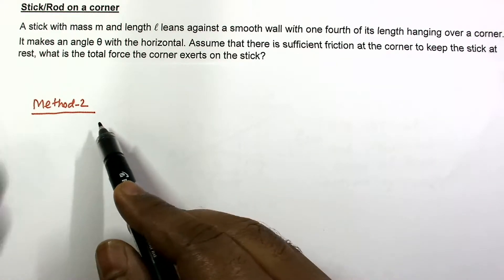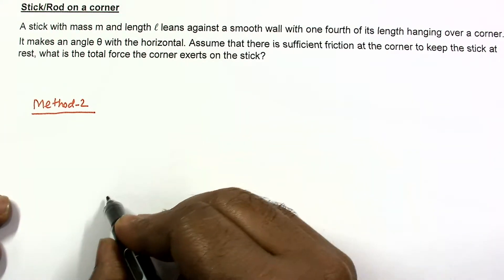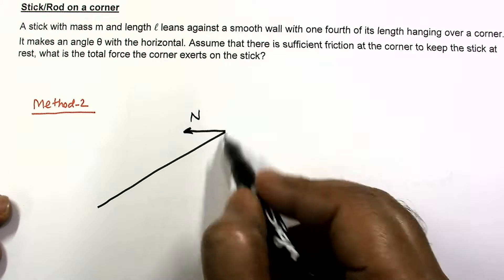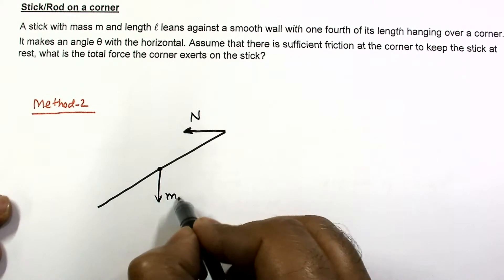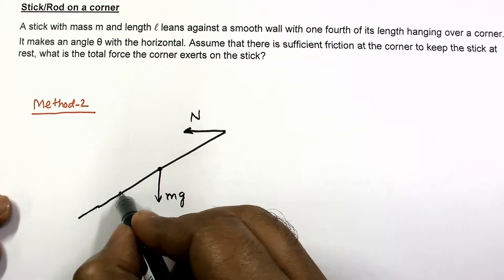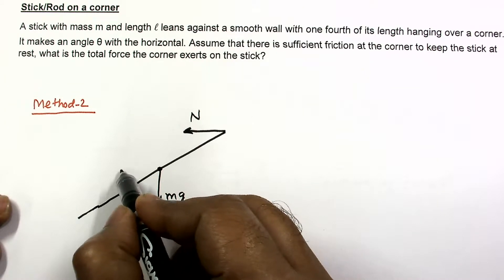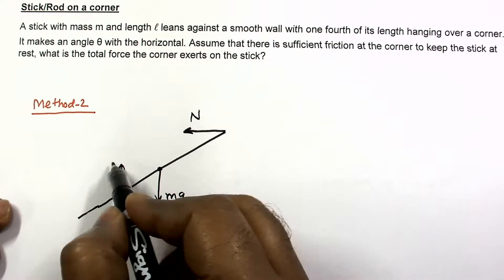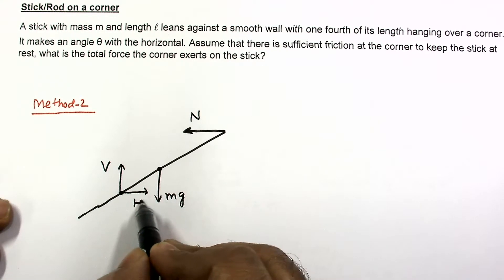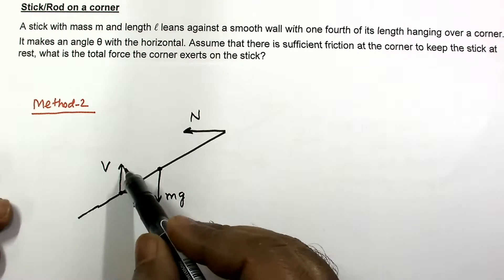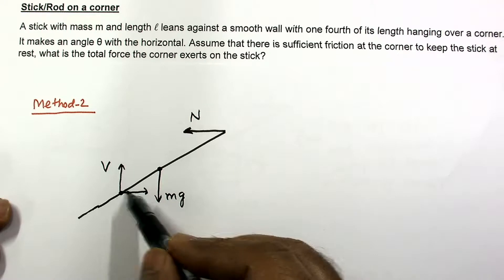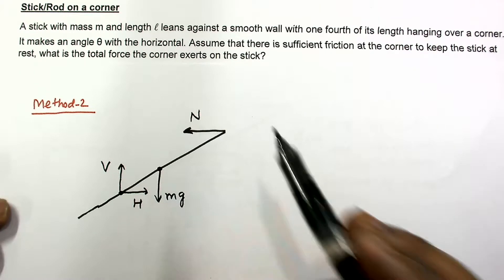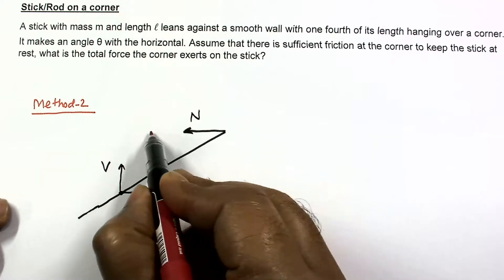We can also apply a second method to solve this problem. Let us draw the free body diagram first. This is the normal reaction applied by the wall, this is MG, and somewhere here is the corner point. At the corner point, the vertical component of the force is V and the horizontal component is H. Basically this is a single force with two components. The resultant force will be somewhere between V and H. So what we will do is extend the lines of action of these forces.